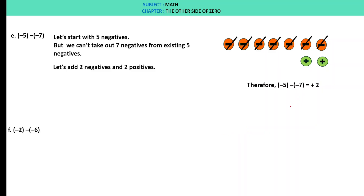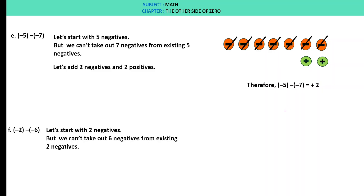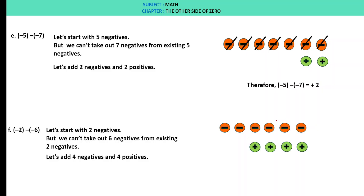F: minus 2 minus of minus 6. Let's start with 2 negatives. But we can't take out 6 negatives from existing 2 negatives. So let's add 4 negatives and 4 positives. We take out 6 negatives and are left with 4 positives. Therefore, minus 2 minus of minus 6 is plus 4.